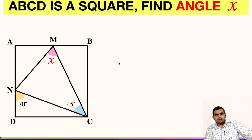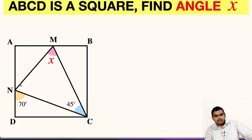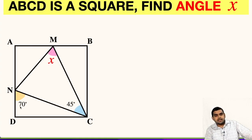Welcome to my YouTube channel. Once again, I am back with another challenging question today. Here ABCD is a square and we have to find the value of angle X. We can see that a triangle NMC is inside this square and two angles are given — one is 45 degrees and the other one is 70 degrees. Let us begin solving this question.